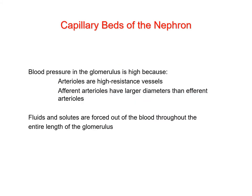The blood pressure in the glomerulus is unusually high because these capillaries must be able to form filtrate. The afferent arteriole feeding into the glomerulus has a larger diameter than the efferent arteriole, which helps maintain pressure — the narrower outlet creates more resistance to outflow, producing higher pressure inside. Fluids and solutes are thus forced out of the blood through the glomerulus to form the filtrate.